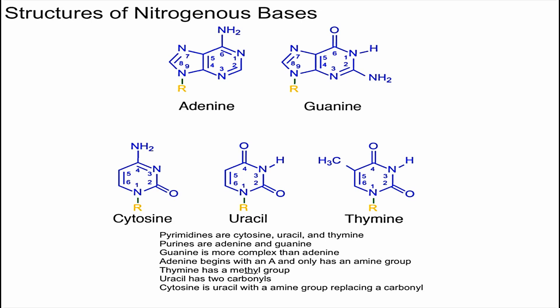For the pyrimidines, I like to start with uracil — I just remember that structure and then modify it slightly to get thymine and cytosine. The structures are very similar. If you add a methyl group (CH3) onto the fifth carbon of uracil, you get thymine. I remember that because thymine has 'THY' and methyl also has 'THY.' Then you're left with cytosine, which just has an amine group replacing a carbonyl.